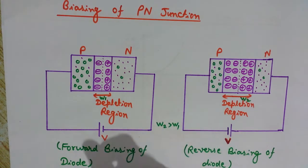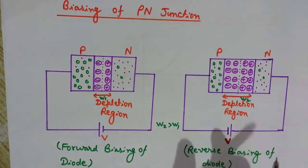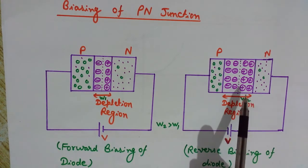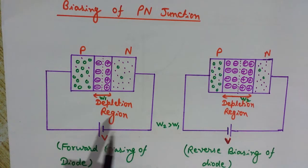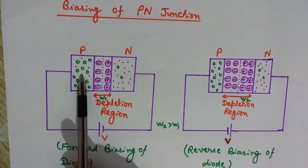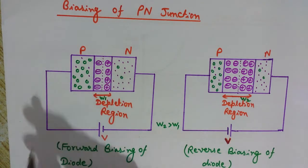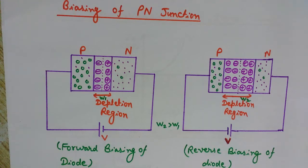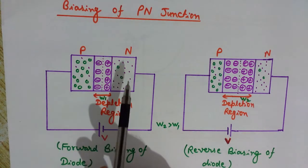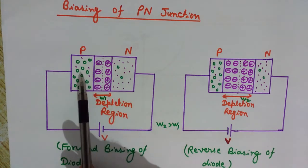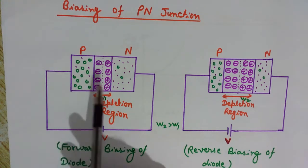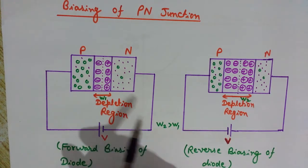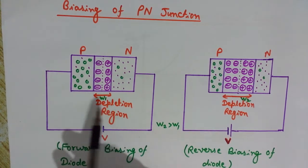You need to understand what happens in the forward biasing and reverse biasing of the diode. Since we use the zener diode always in reverse biasing, we will understand that concept. Here is the P side and the N side. When we have an intrinsic semiconductor — the purest form of the semiconductor — and we add impurities to increase its conductivity, it becomes an extrinsic semiconductor. It can be P-type or N-type. When we add pentavalent impurities it becomes N-type, and when we add trivalent impurities it becomes P-type.